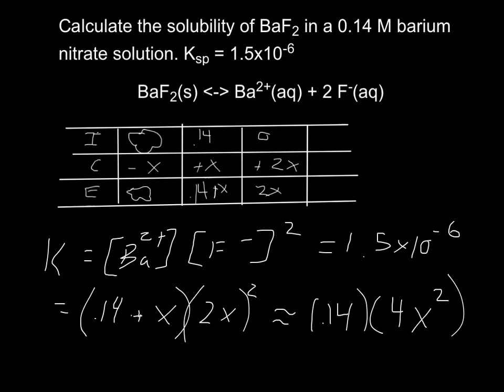Alright, so the next step is to write out the equilibrium expression. Set it equal to the Ksp value and solve for X. Notice 0.14 plus X is going to be basically 0.14 so we can make that simplification.